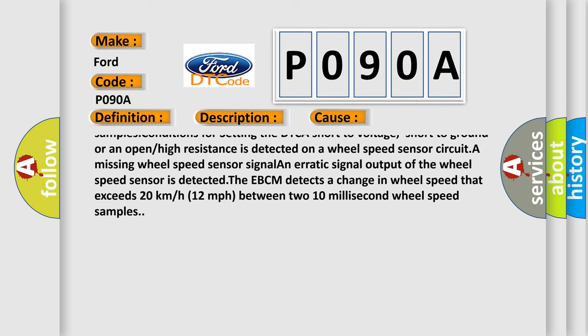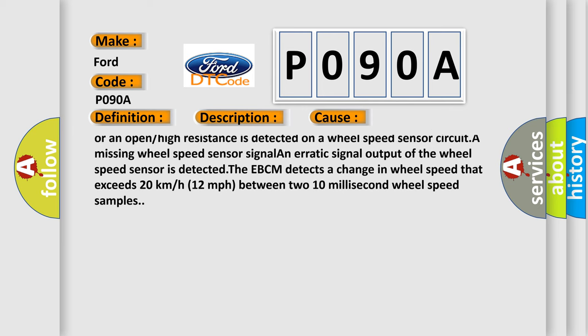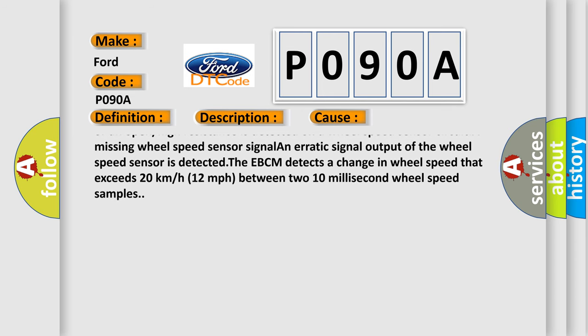The EBCM detects a change in wheel speed that exceeds 20 kilometers or 12 miles per hour between two 10 millisecond wheel speed samples.